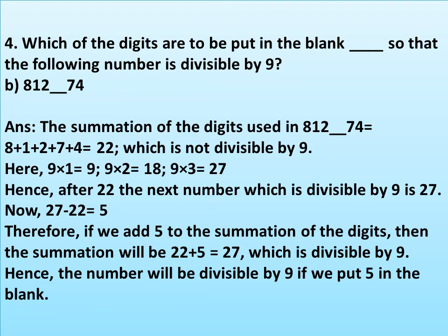For 812_74, the sum of the known digits is 8 + 1 + 2 + 7 + 4 = 22, which is not divisible by 9. The next multiple of 9 after 22 is 27. So 27 − 22 = 5. Therefore, if we put 5 in the blank, the digit sum becomes 27, which is divisible by 9. The number will be 812574.